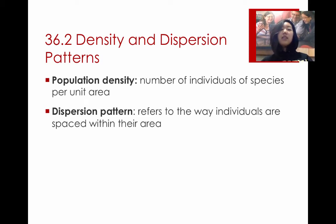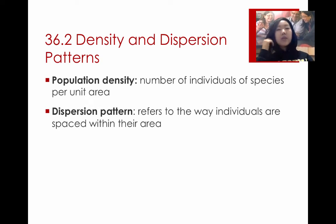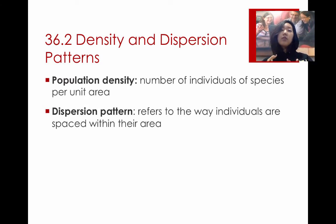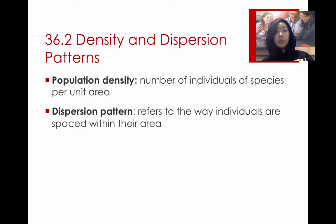Population density is a measure of the number of individuals of a species per area — so we're looking at how dense the population is. Aside from density, you can also consider the dispersion of the individuals within a given area. Looking at how those individuals are spaced out can tell us a lot about social patterns and also about distribution of resources.